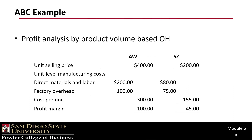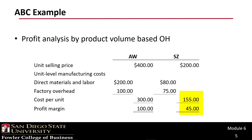If we do a profit analysis based on volume to assign overhead: the unit selling price of AW is $400 and $200 for SZ. Direct materials and labor for AW is $200, factory overhead is $100, so cost per unit is $300, leaving a profit margin of $100. For SZ, direct materials and labor are $80, factory overhead is $75, cost per unit is $155, with a profit margin of $45 per unit.